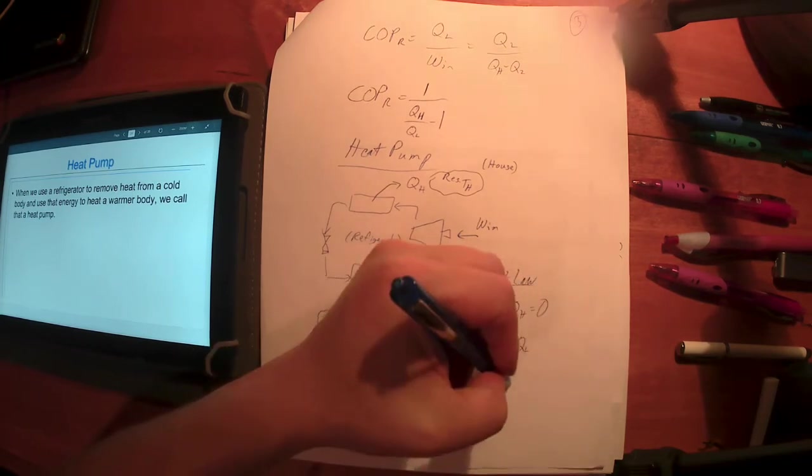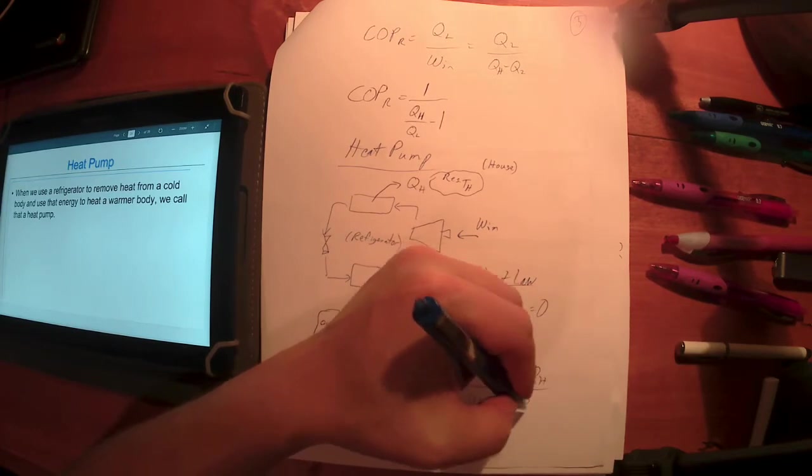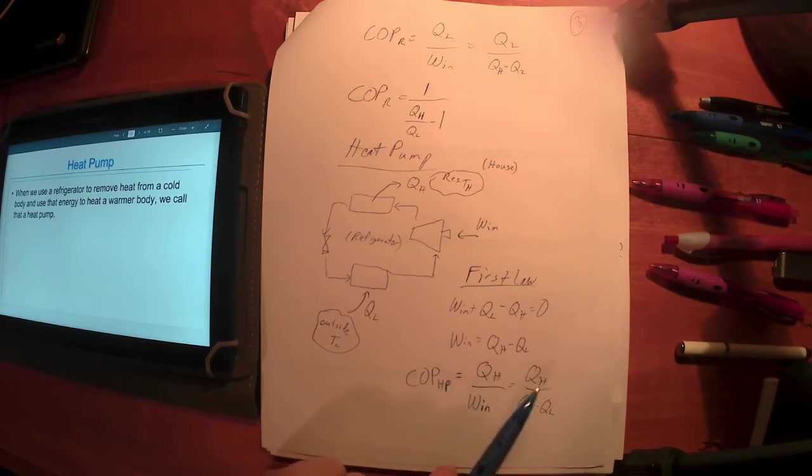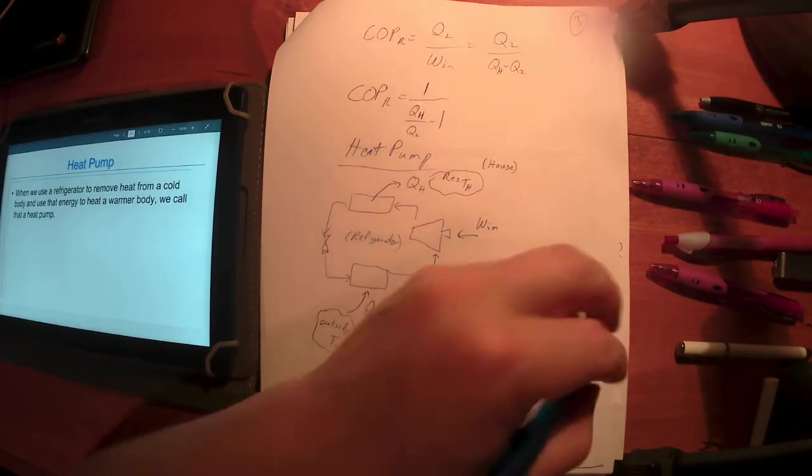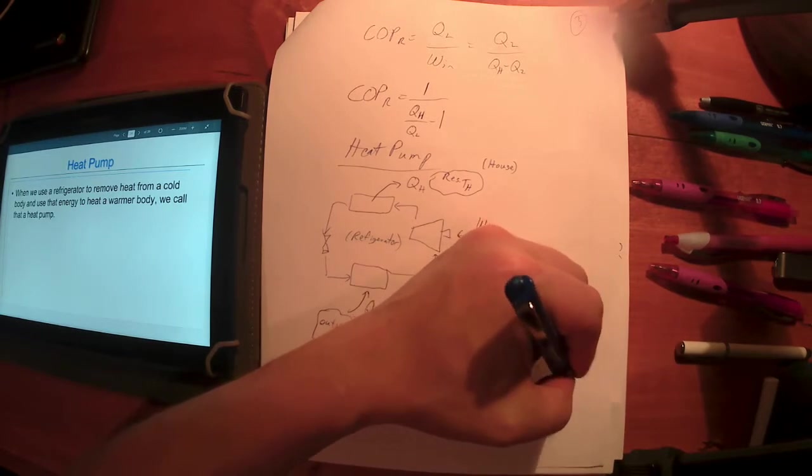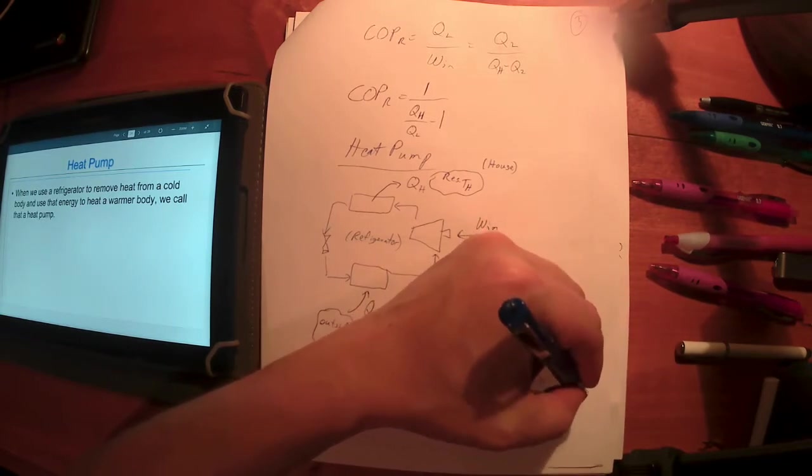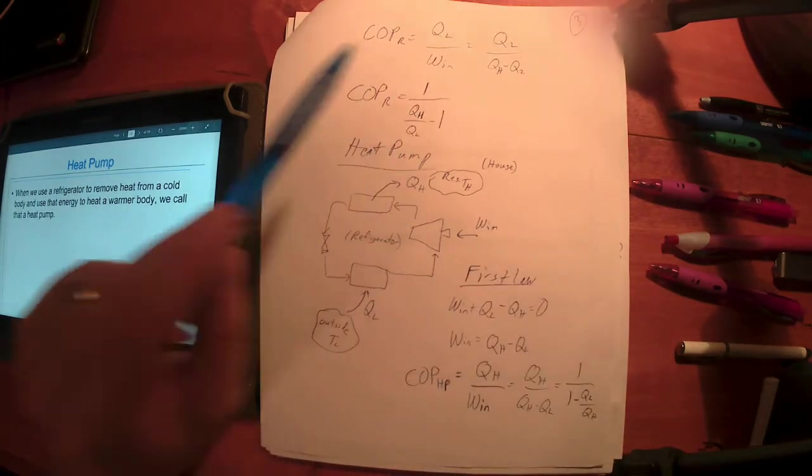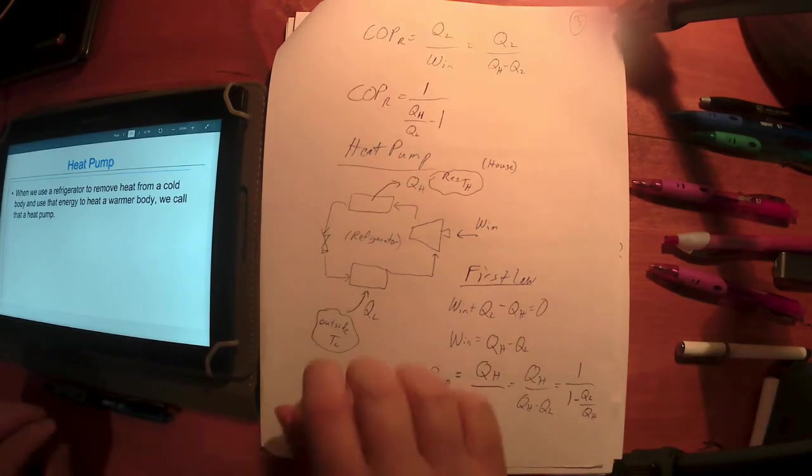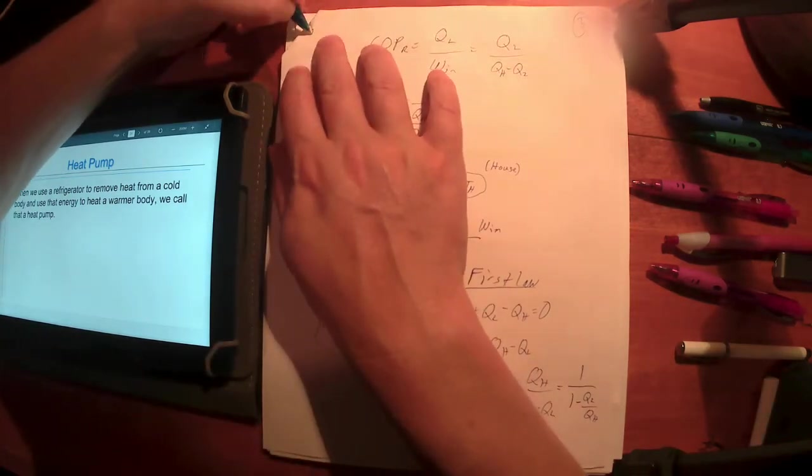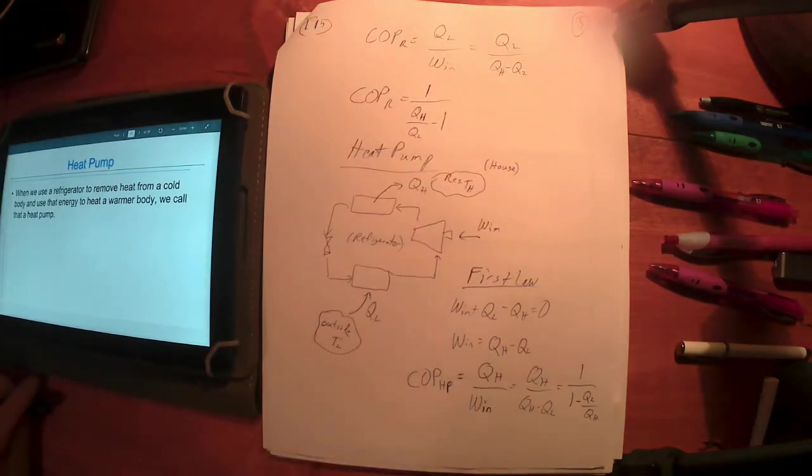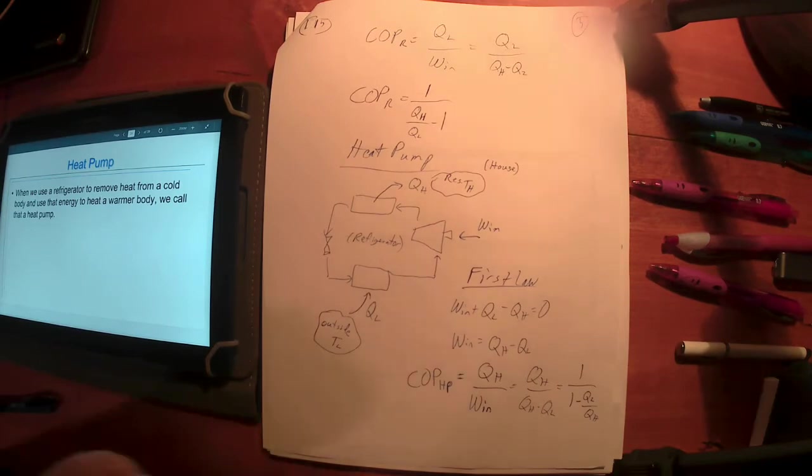If I take this quantity here and substitute it in, I've got QH over QH minus QL. This expression always works because this is true. If I divide everything by QH, I get 1 over 1 minus QL over QH. Remember we did that for the refrigerator and for the heat engine in the last lecture, lecture 15.